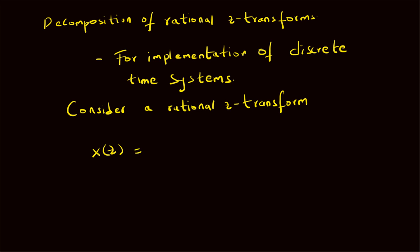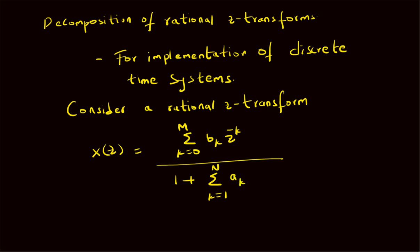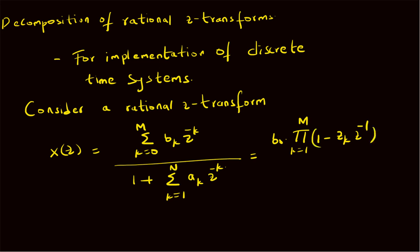Consider a rational z-transform: X(z) equals summation k equals zero to capital M of b_k times z to the power minus k in the numerator, and in the denominator we have one plus summation k equals one to capital N of a_k times z to the power minus k. This can also be written in factored form as a constant multiplied by the product of (1 minus z_k z-inverse) for zeros, divided by the product of (1 minus p_k z-inverse) for poles.